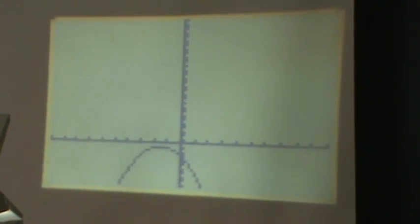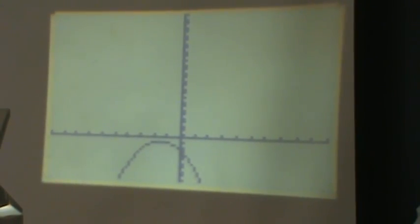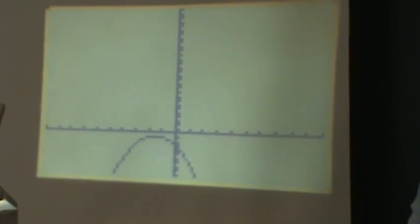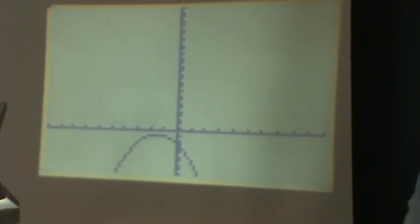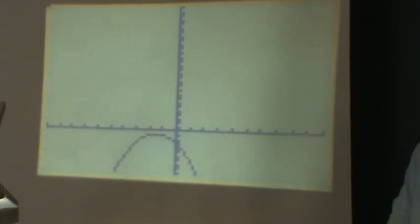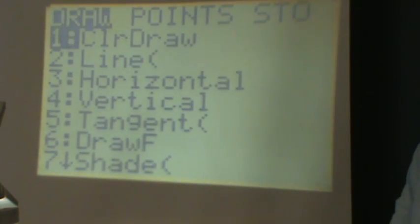and now I want to find out what is the equation of the tangent line drawn to this curve at x equal to 1. So I'm going to go to the draw button, that's above the program button. I'm going to go to draw, and there it is, number 5 on the list is tangent.